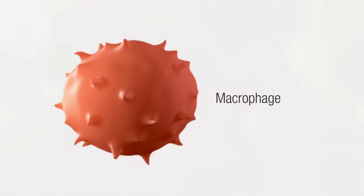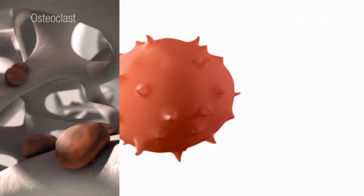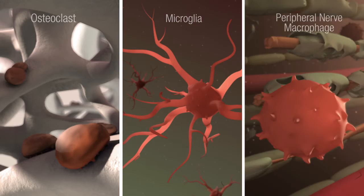These macrophages can be found in many tissue types, including bone, brain, and even in the peripheral nerves.